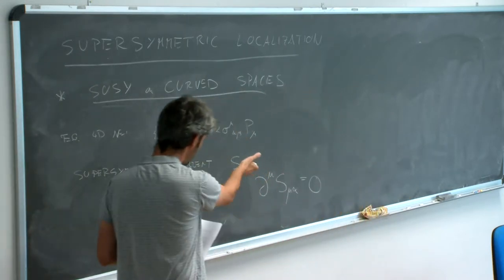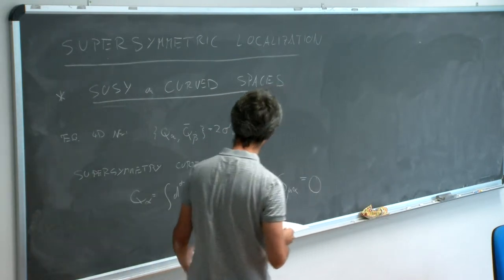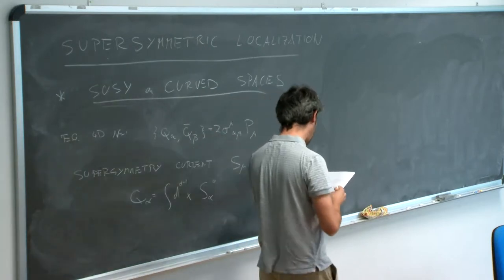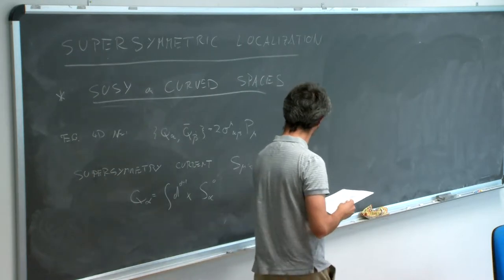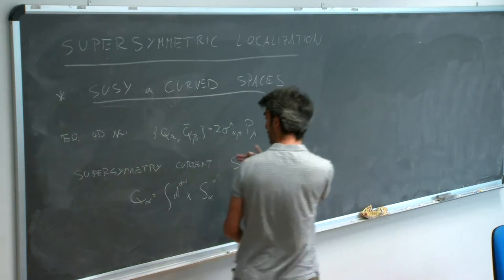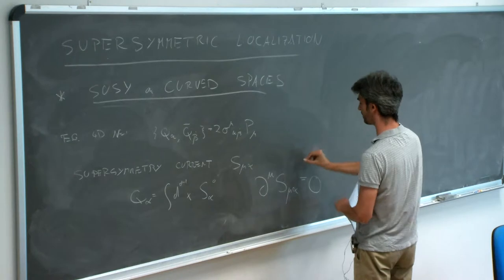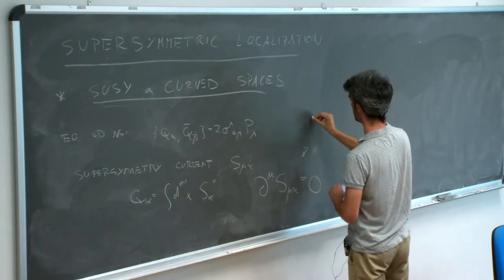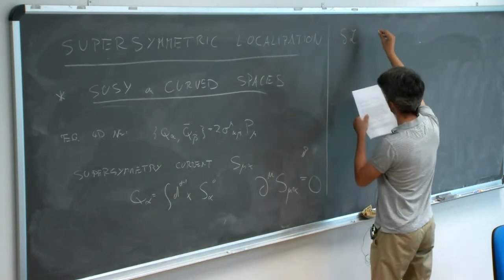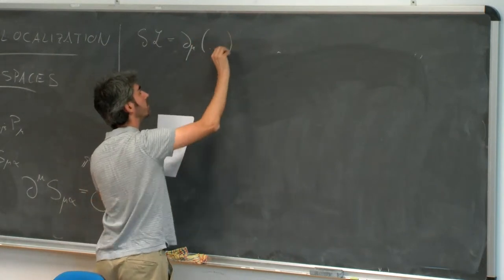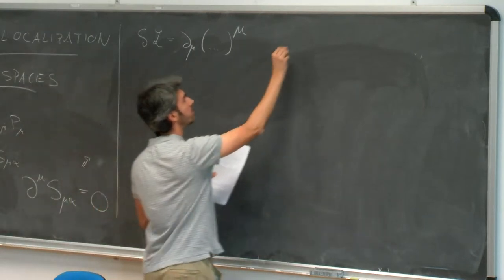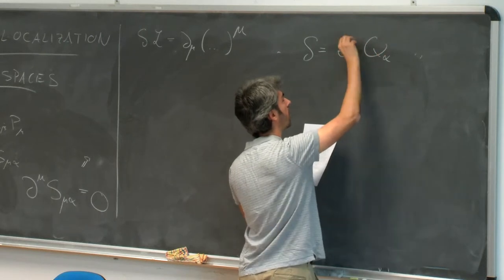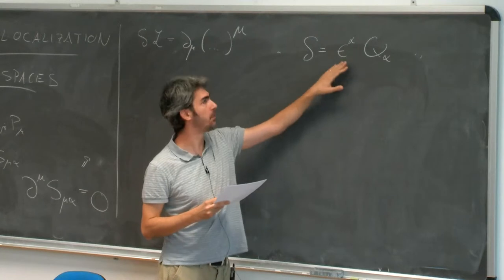A theory is supersymmetric if these supersymmetry currents are conserved. In theories with a Lagrangian description—which is the setup we restrict to since we need an action to compute path integrals—the action is invariant under the action of the supercharges, so the Lagrangian is invariant up to total derivatives. The variation of the Lagrangian is a total derivative of something, where delta is an anticommuting scalar operator coming from contracting the supercharges with commuting spinorial parameters—the supersymmetry parameters—which for now are constant.